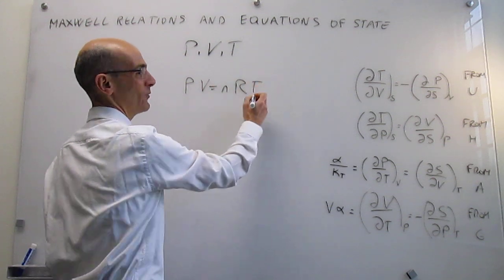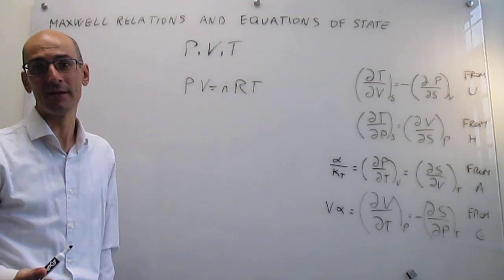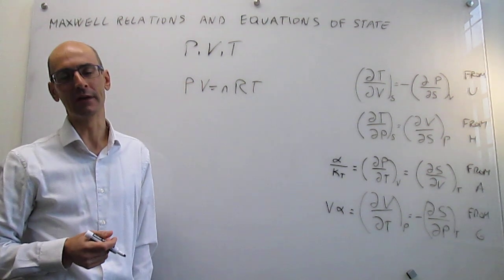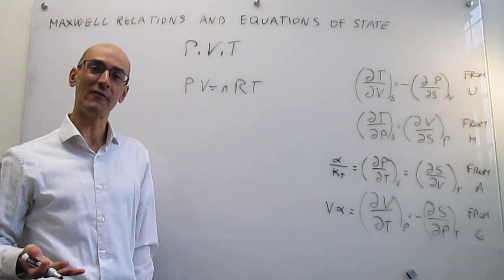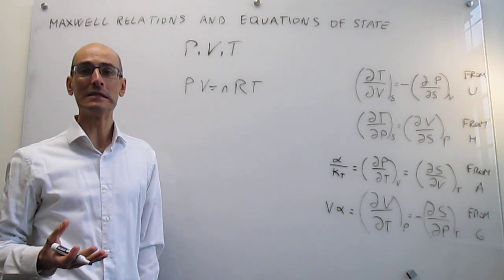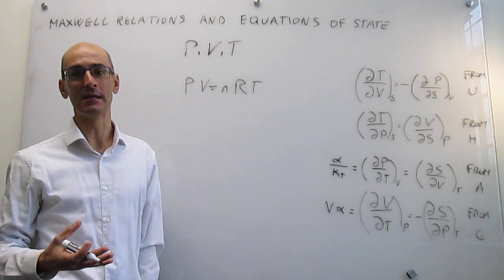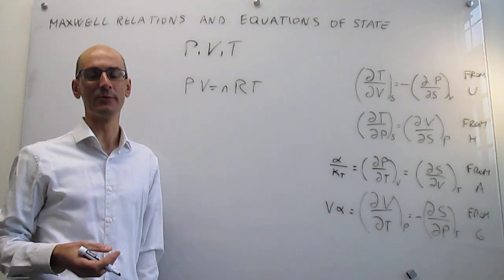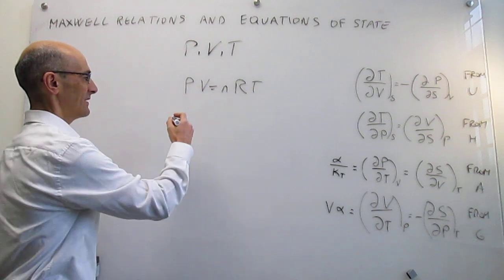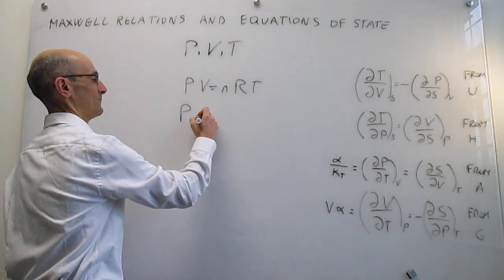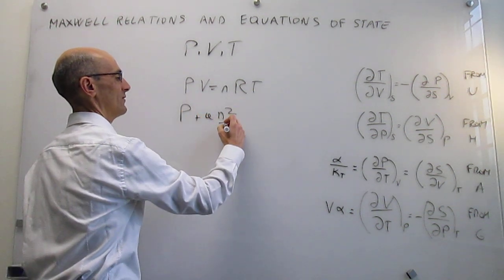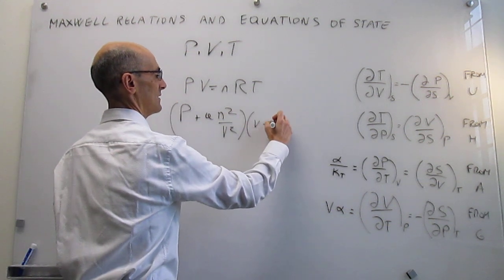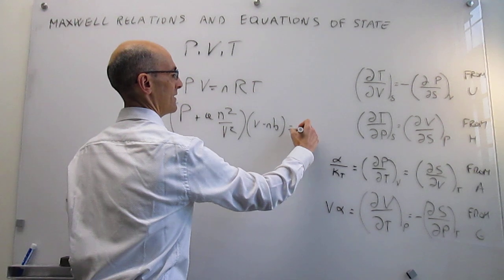We also saw that this only applies to ideal or perfect gases, and when you have real gases you have to think about corrections. The Van der Waals equation of state is one of those equations of state that tries to incorporate attractions and repulsions between gas molecules, and it has the form: (P + an²/V²)(V − nB) = nRT.